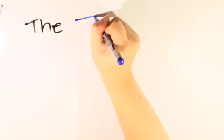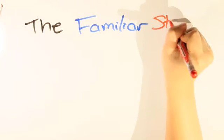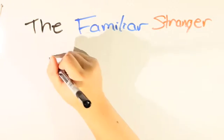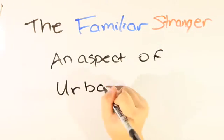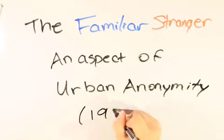This social phenomenon was first identified by Stanley Milgram in his 1972 paper, the familiar stranger, an aspect of urban anonymity. It has become an increasingly popular concept in research about social networks.